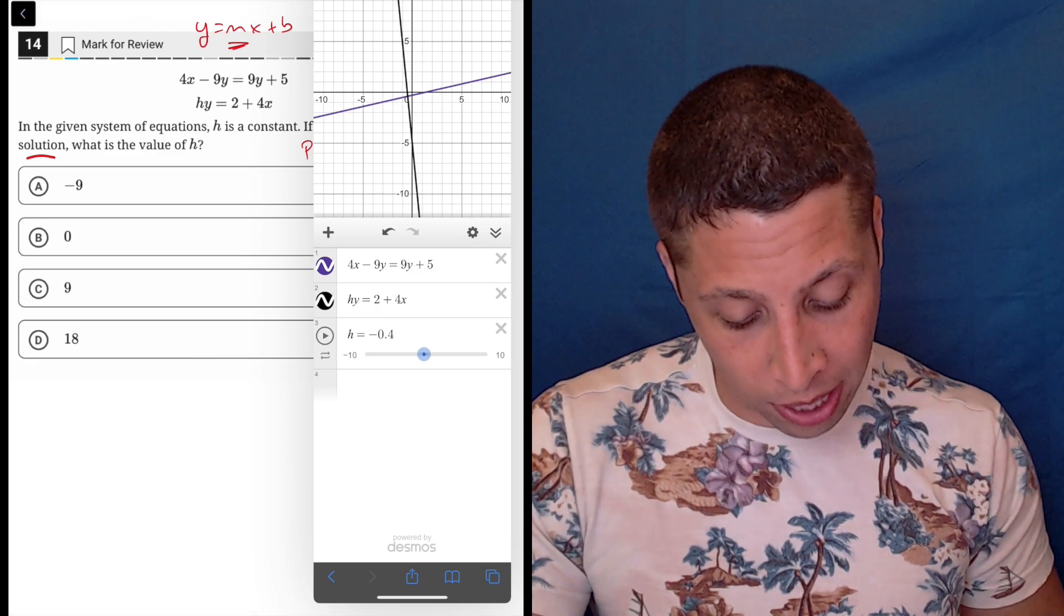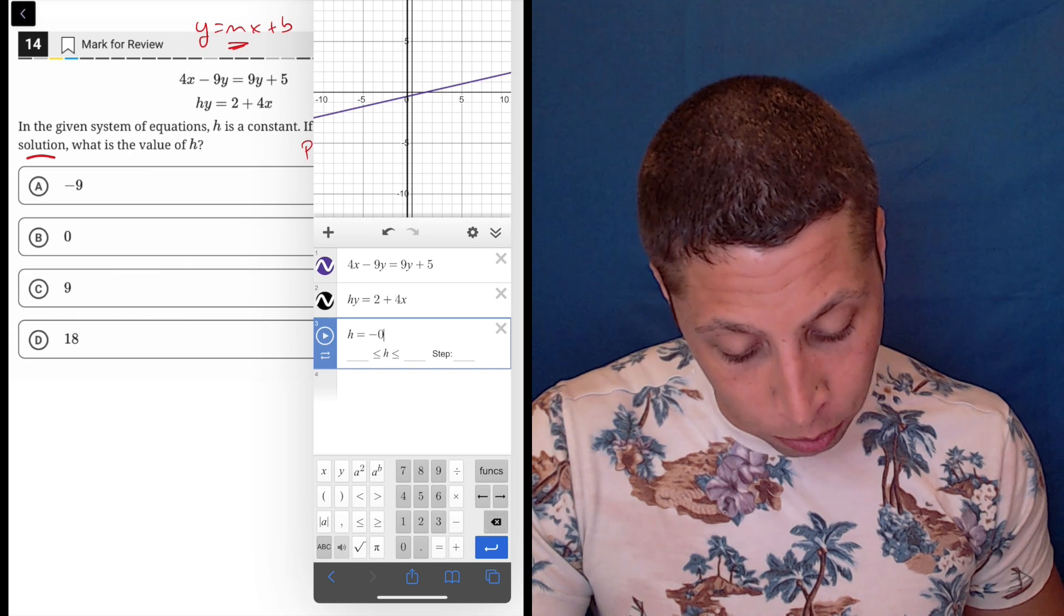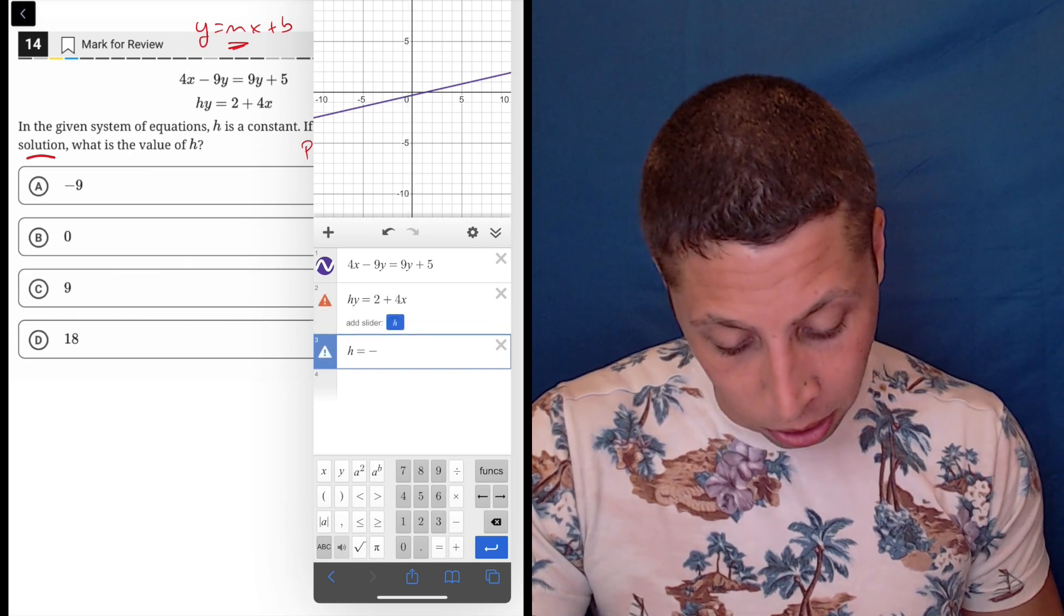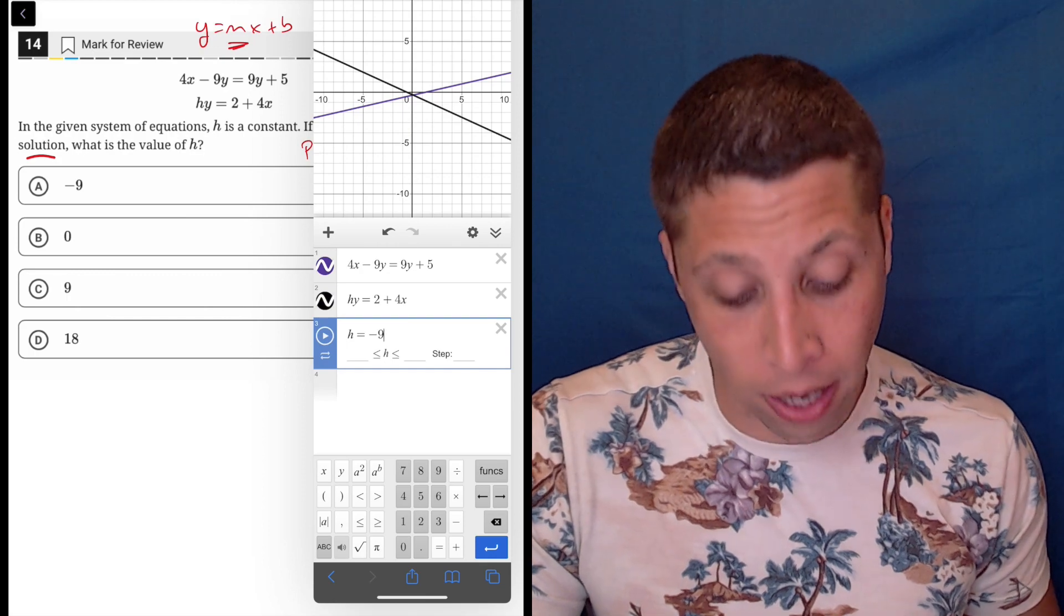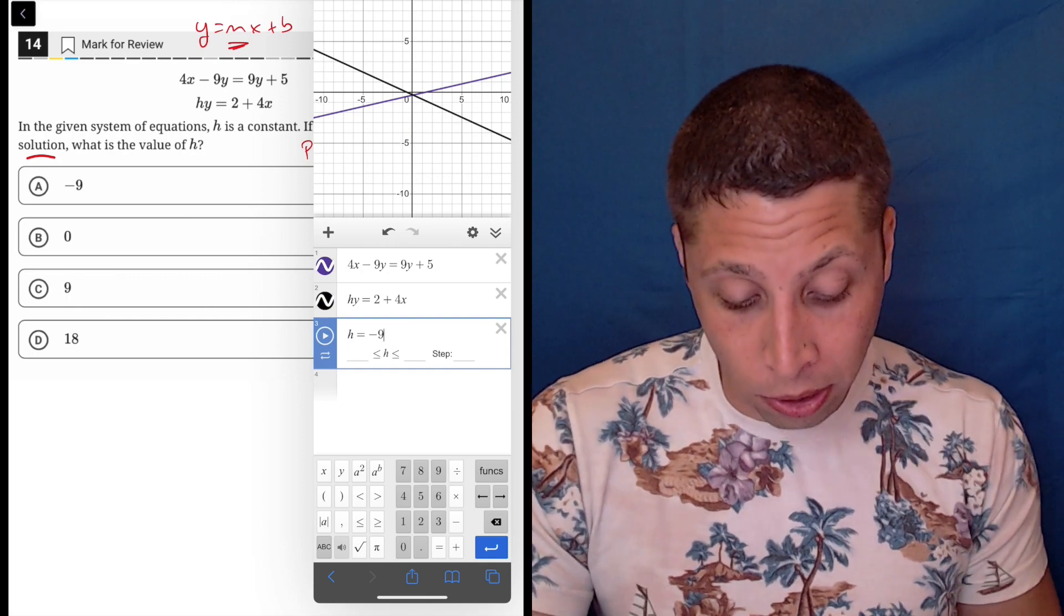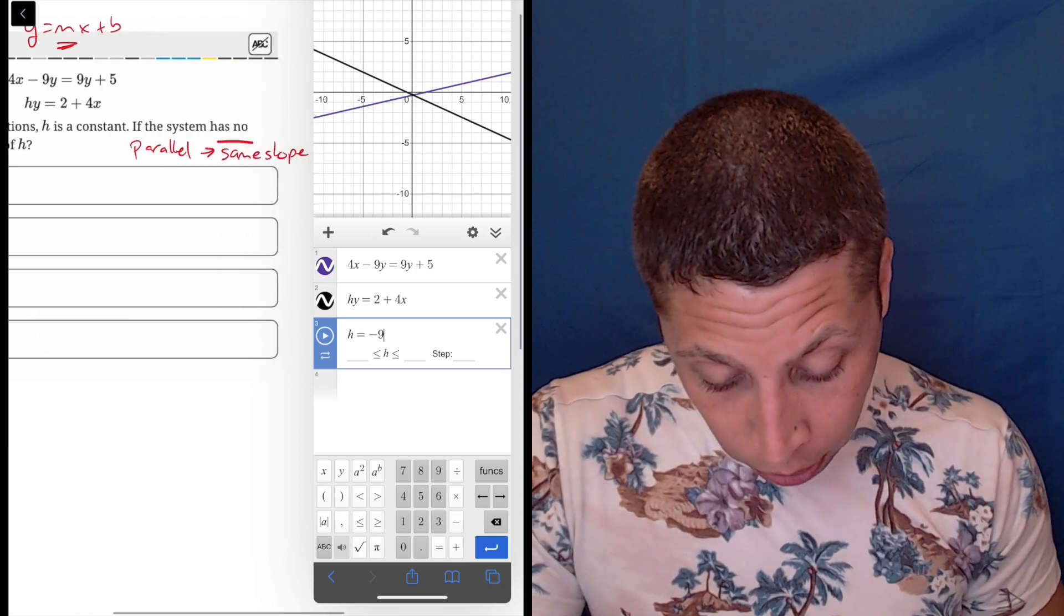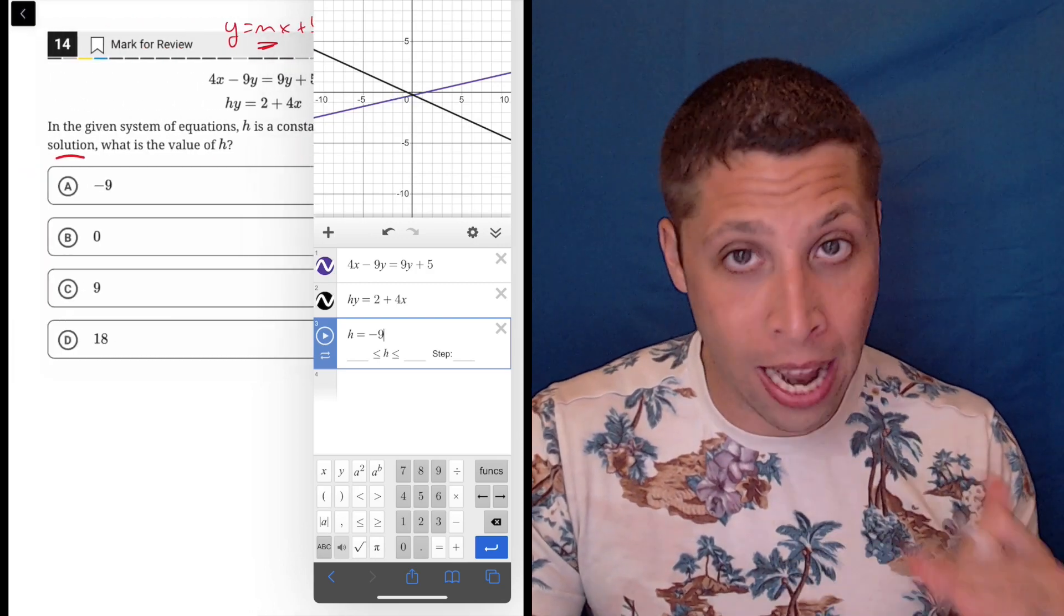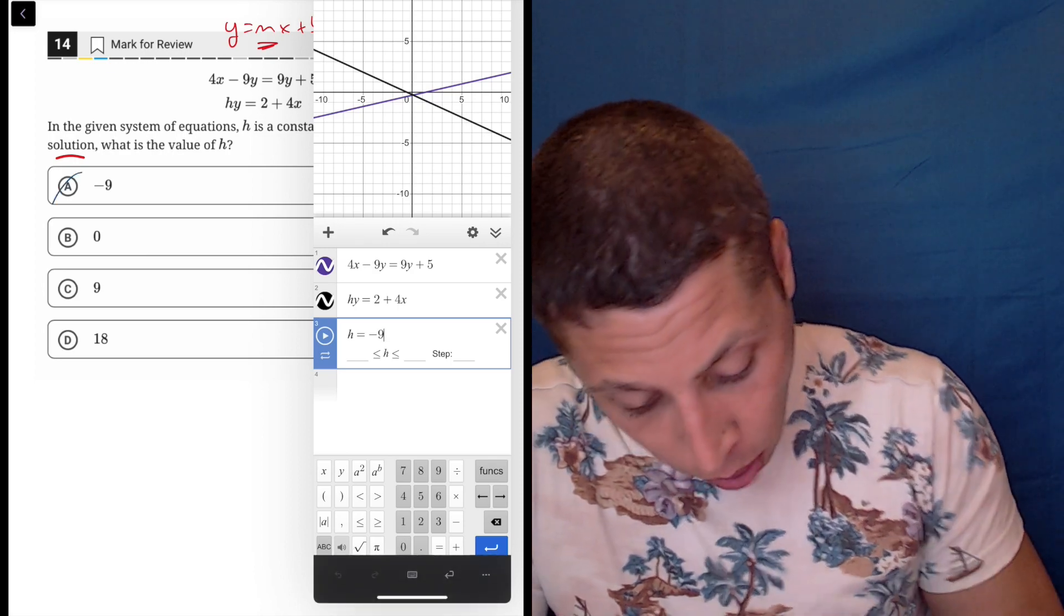So let's just go through the choices. The first choice would make h negative 9. So let's just see. Okay, negative 9. Well, that has one solution, right? These two lines very clearly cross right near the origin there, very close to the middle, but they need to have no solutions, meaning they cannot cross at all. So that means that this is wrong.